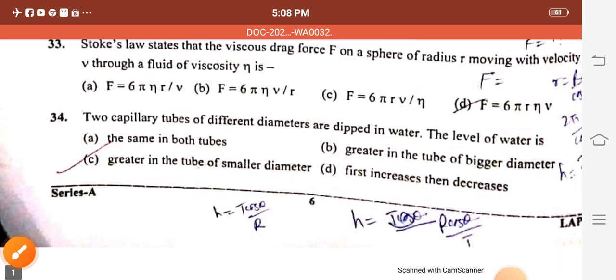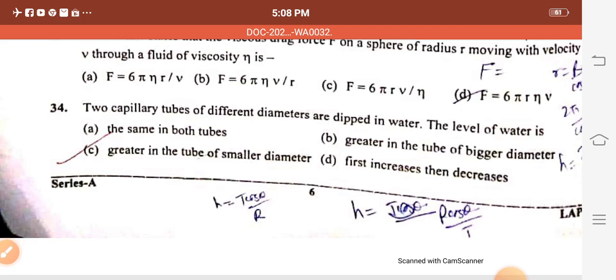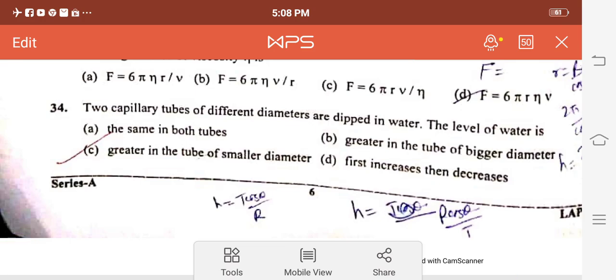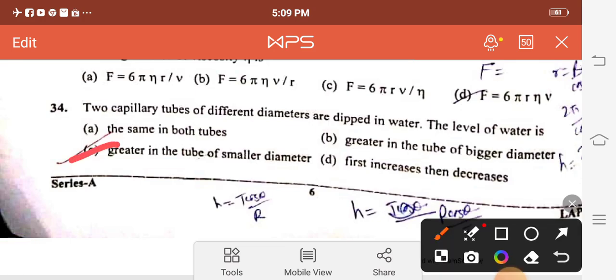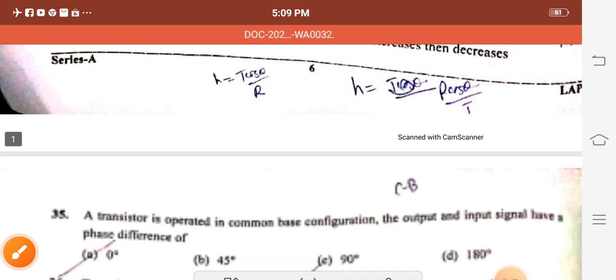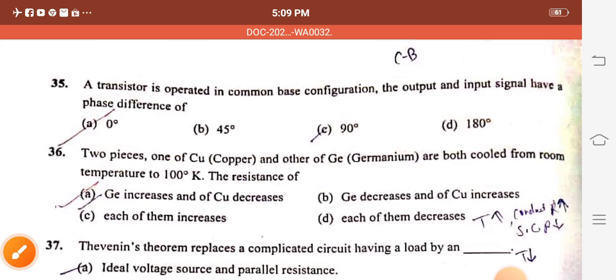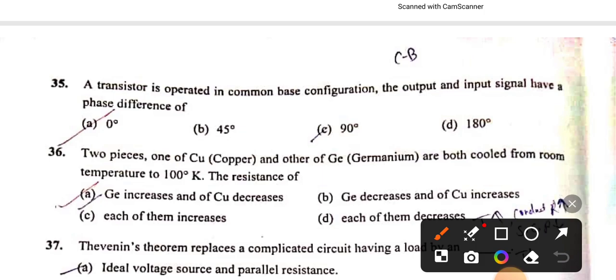Question 34: Two capillary tubes of different diameters are dipped in water, the level of water is greater in the tube of smaller diameter, option C. Question 36: Two pieces, one of copper and other of germanium are both cooled from room temperature to 100 degree Kelvin, the resistance of germanium increases and copper decreases because germanium is semiconductor and copper is a conductor, option A.